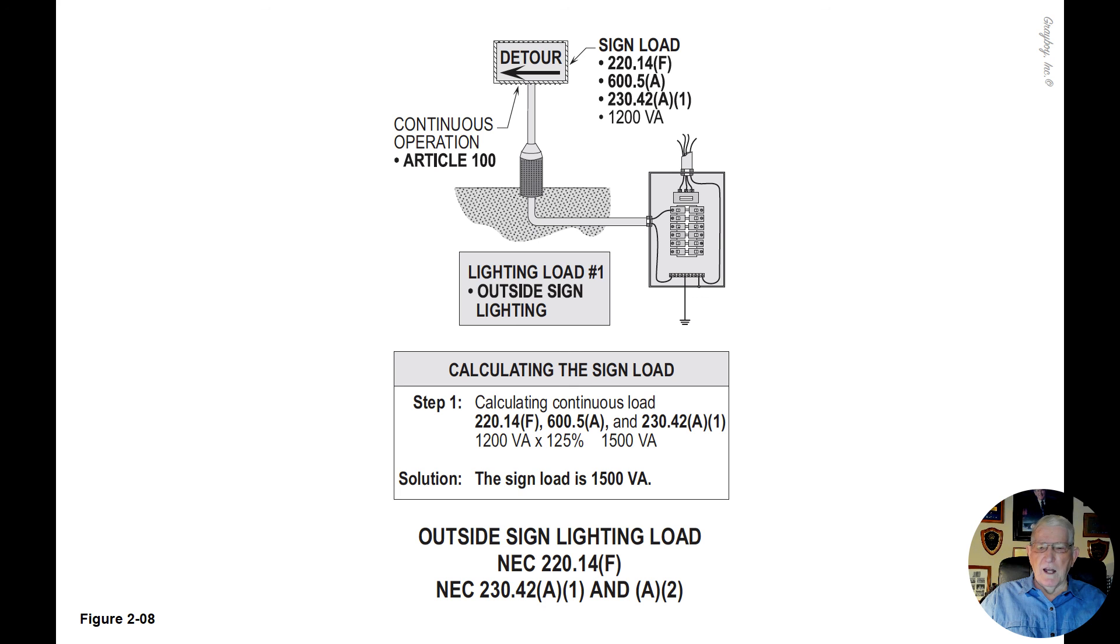This figure 2-8 strictly deals with the outside sign lighting load and the requirements to provide such a VA rating along with a 20 amp circuit brought to the front of the store building where the access of a pedestrian would have to enter into a store.